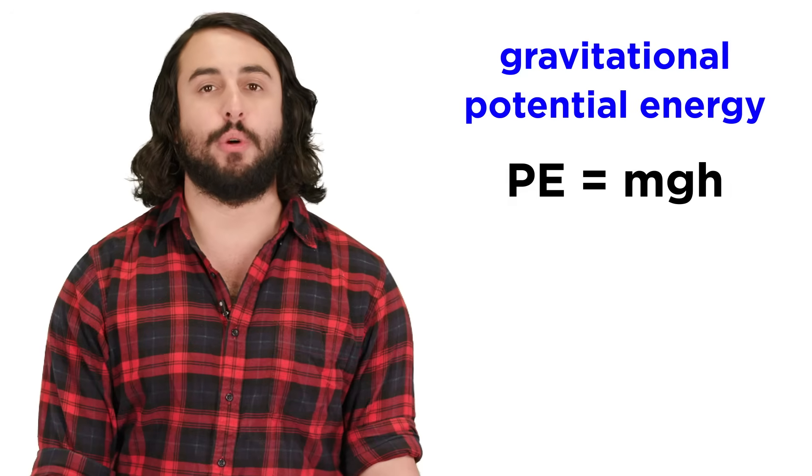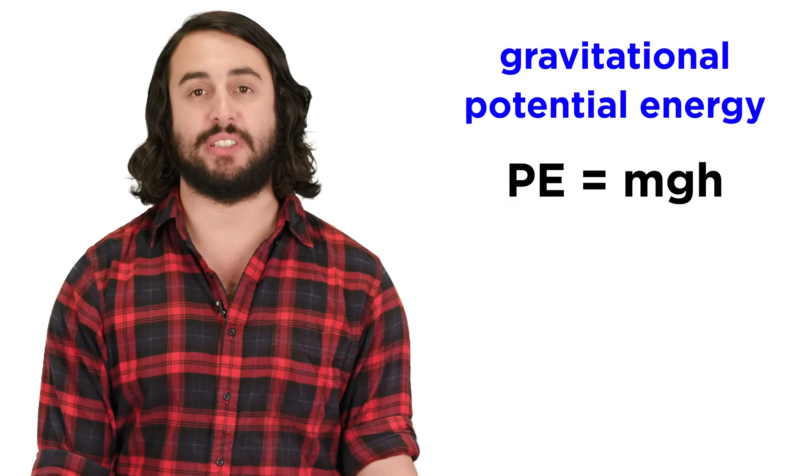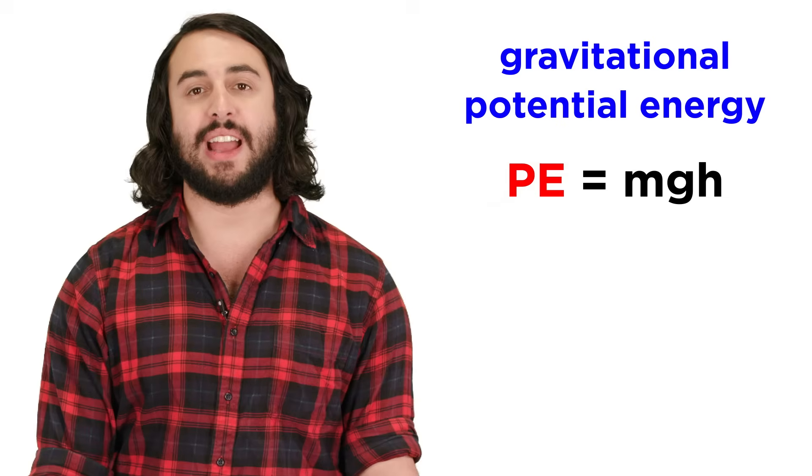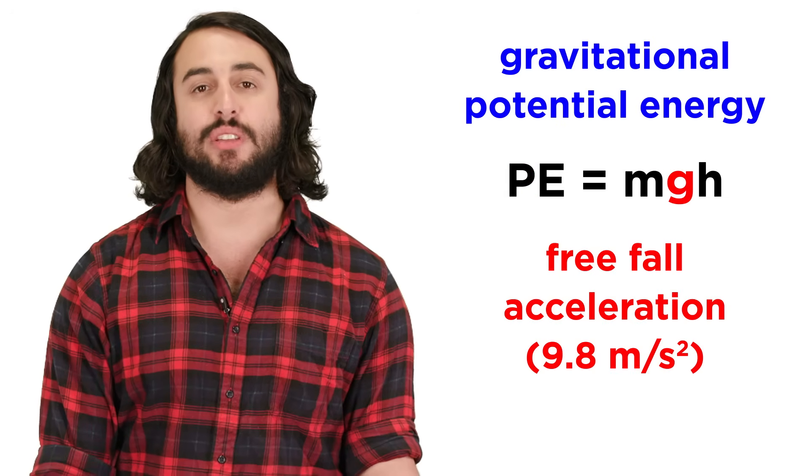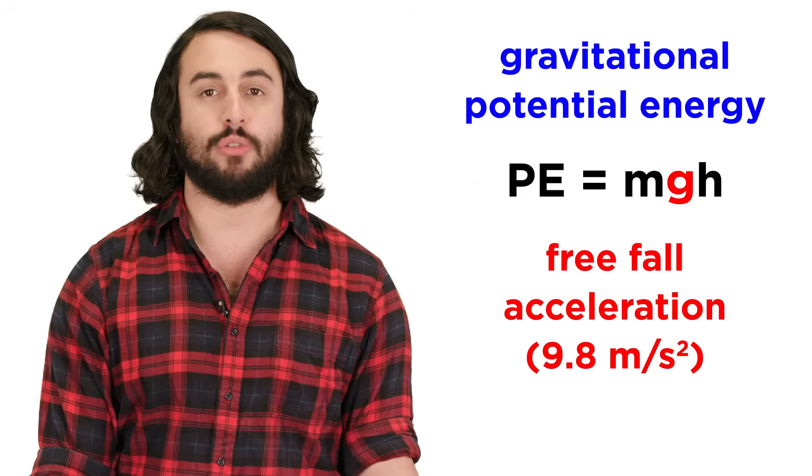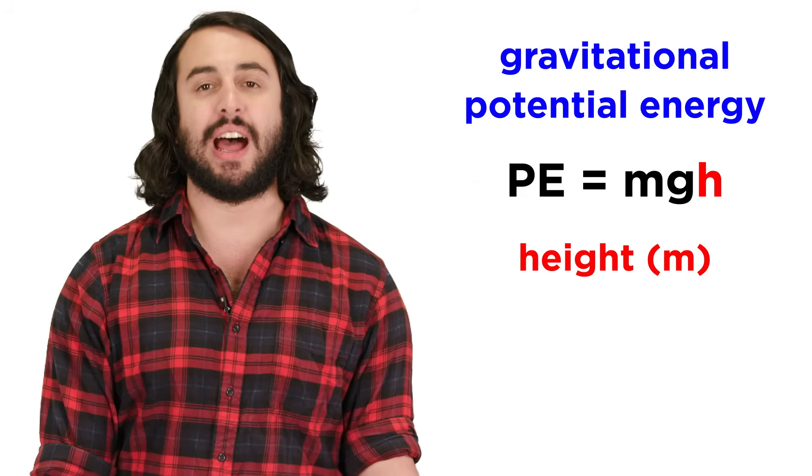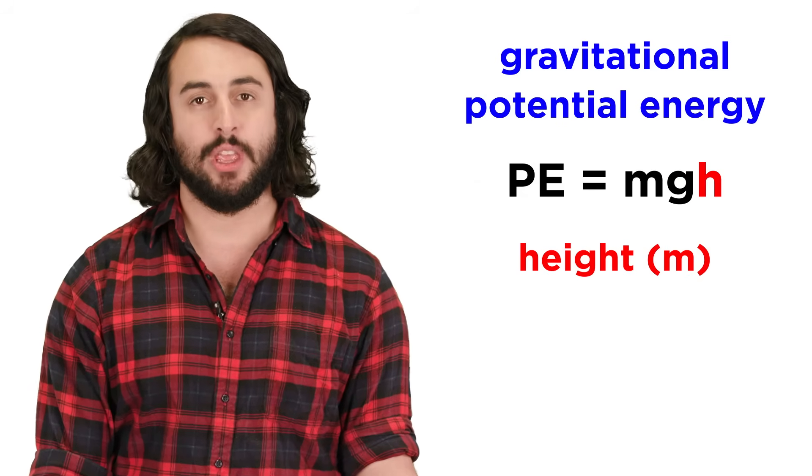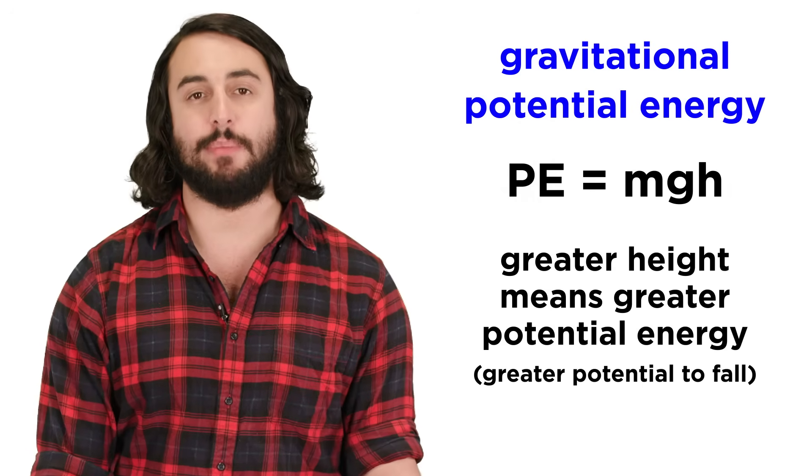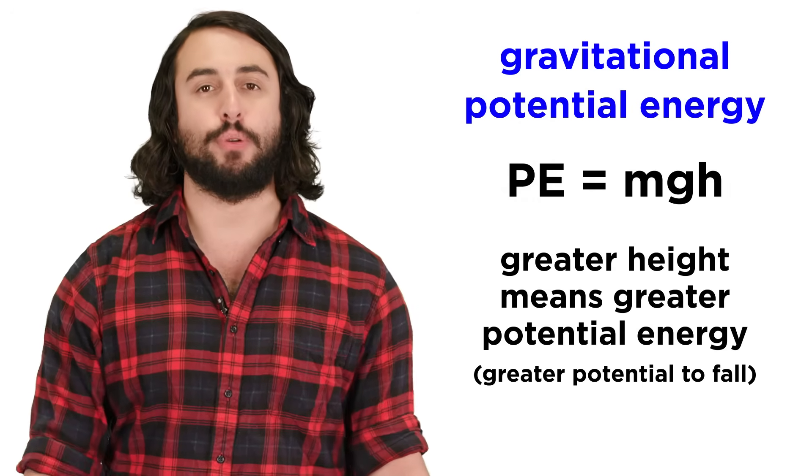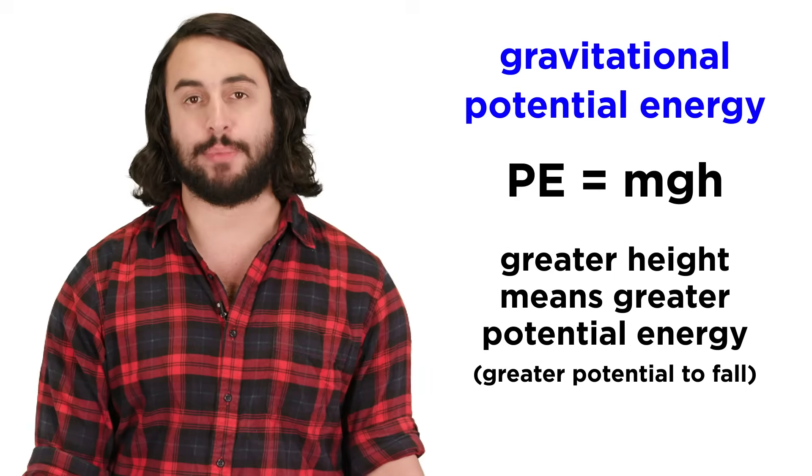In this course we will frequently be discussing gravitational potential energy for objects on earth, and for any object this will be equal to the mass of the object in kilograms times the free-fall acceleration due to gravity for the earth times the height of the object in meters. The greater the height the greater the potential energy, as this represents the work that can be done by gravity to produce the motion of a falling object.